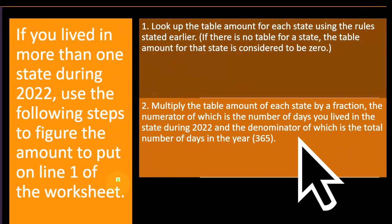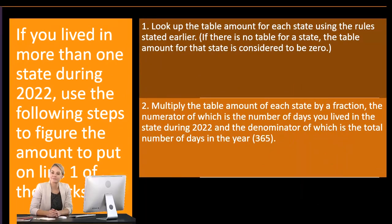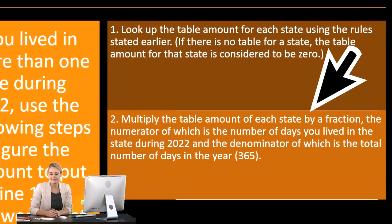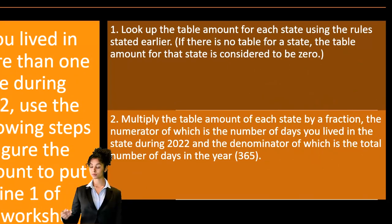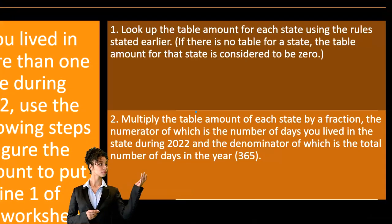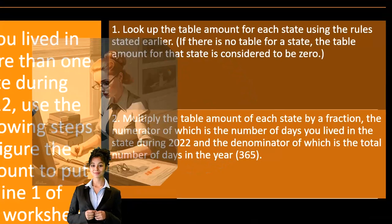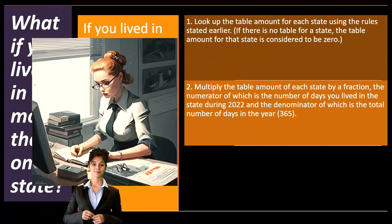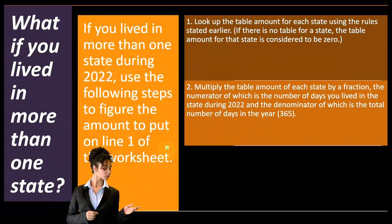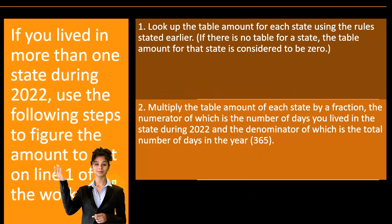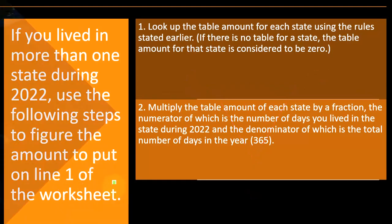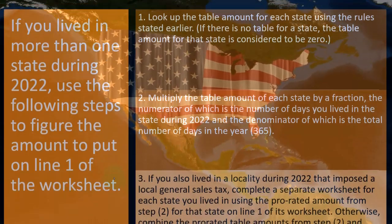Step two: multiply the table amount for each state by a fraction — the numerator being the number of days you lived in that state during 2022, and the denominator being the total number of days in the year, 365. So if you lived in two states for a fraction of the year, calculate that fraction and apply one table for one fraction and the other table for the other fraction. This fraction approach — breaking out what percentage of the year you were in each state and applying the appropriate tax tables — is a useful concept to have in your toolkit.